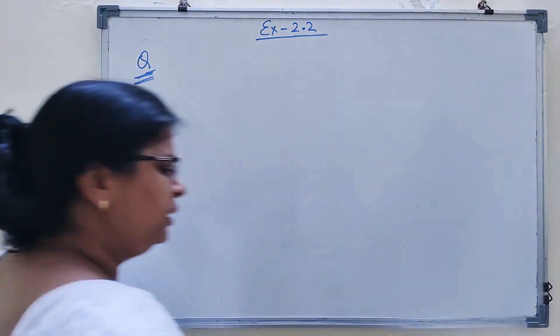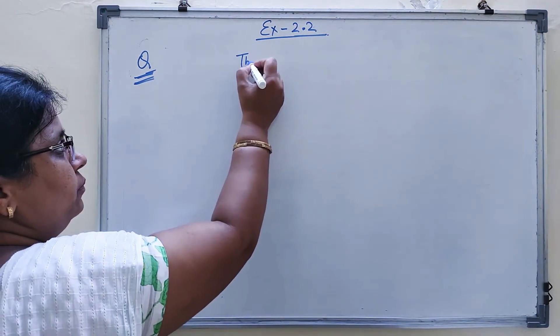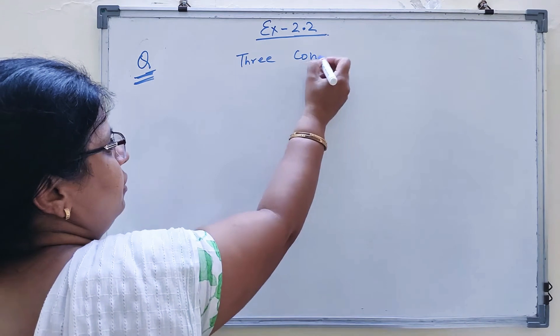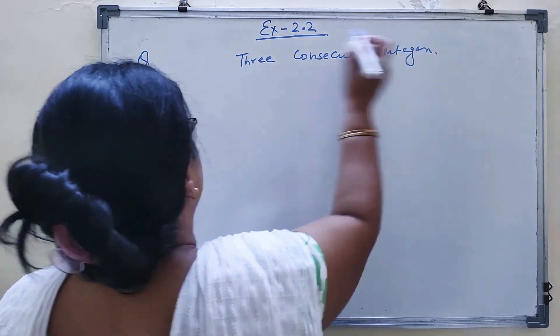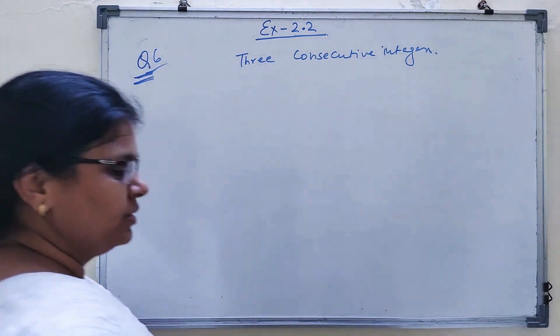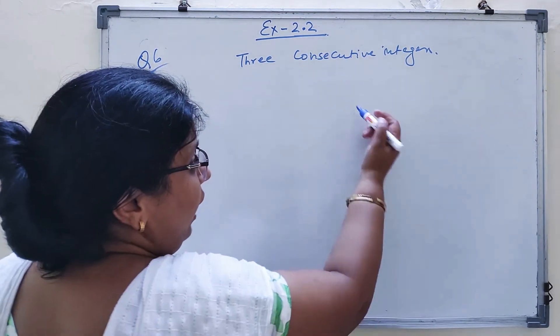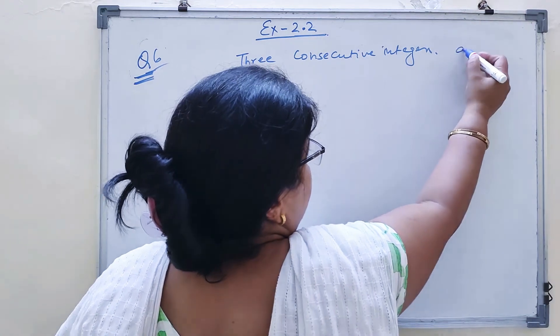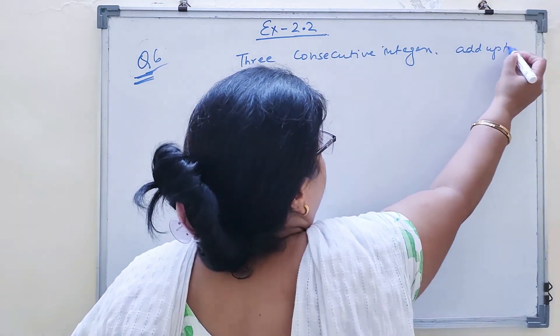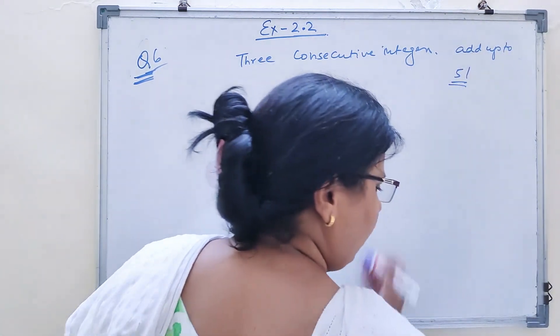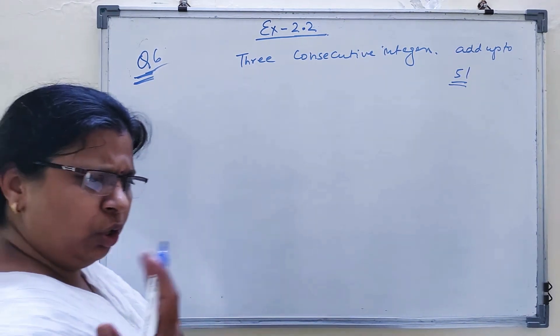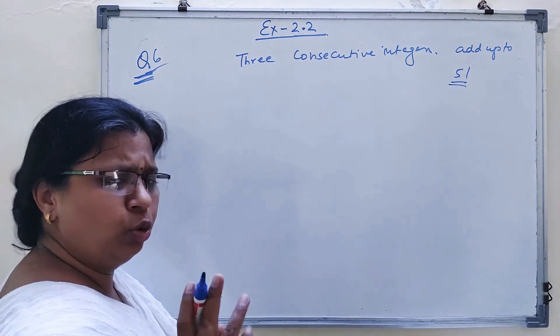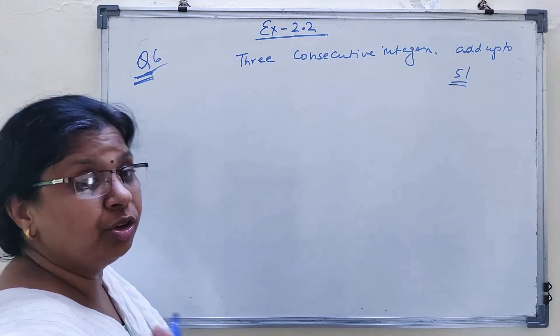Next, three consecutive integers. This is question number 6 of Exercise 2.2. They add up to 51 and you are asked to find out these integers. Integers are all negative and positive numbers.